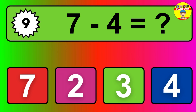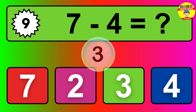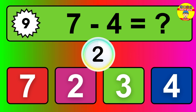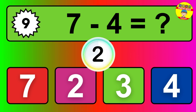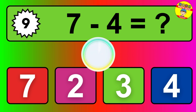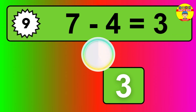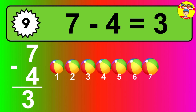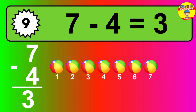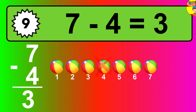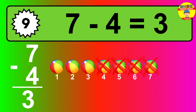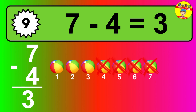Question 9. 7 minus 4 equals what? So the answer is 7 minus 4 is 3. Let's count it: 1, 2, 3.